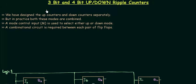We have already designed up counters and down counters separately in previous presentations. In this lecture I will teach you how to design 3-bit and 4-bit up-down ripple counters. This ripple refers to asynchronous counters where the clock is not simultaneous to all the flip-flops. Up-down means this counter can count up as well as count down, and depending upon the mode control input M, we select the up or down mode.